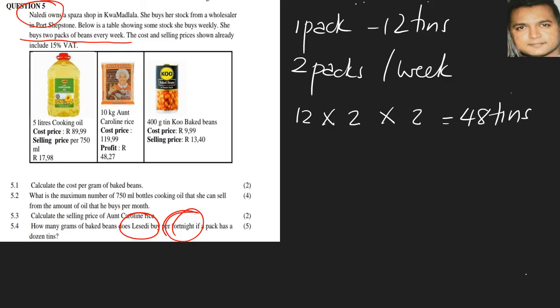But this does not complete our question because our question states how many grams. So if we had to look at how many grams, we know that from our information above, in terms of our baked beans, it's 400 grams per tin. So let's use that information and say 48 times 400, and our final answer will be 19,200 grams.